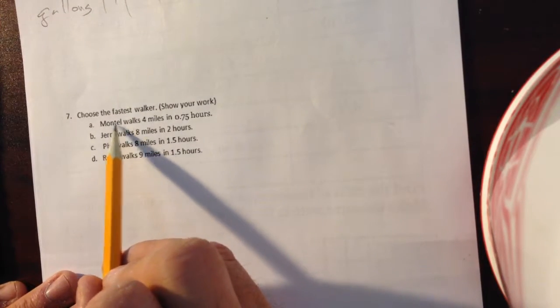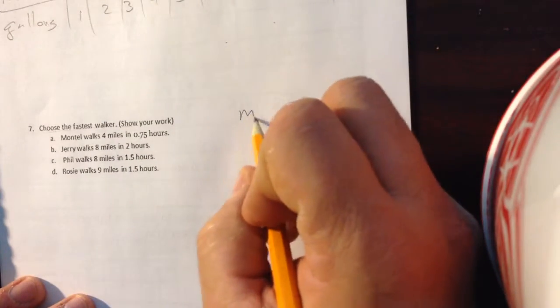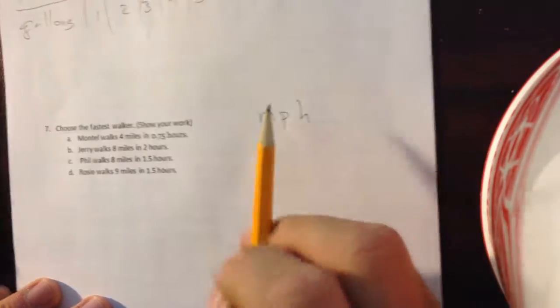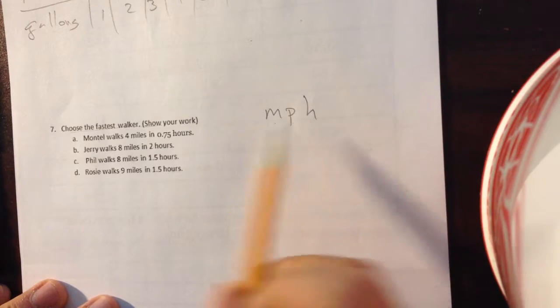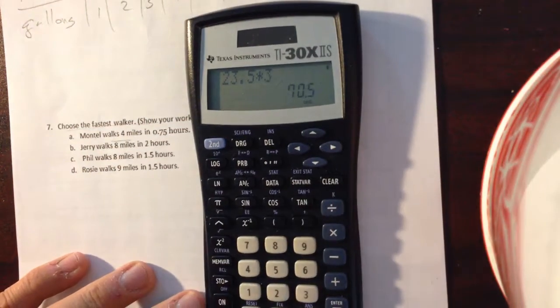Okay, here. Who is the fastest walker? So, we want to know who is going the fastest mile per hour. Again, miles divided by hour. So, the first one, 4 miles and 0.75 hours. Now, this is tricky because what a lot of kids are going to want to do.